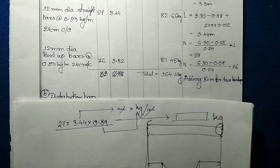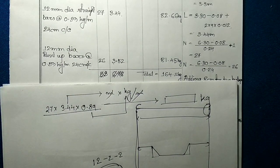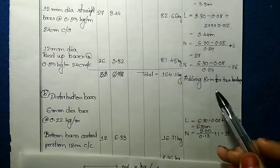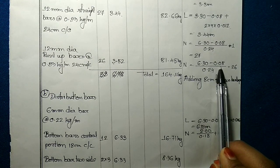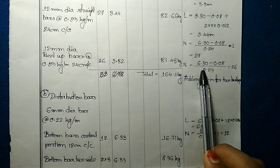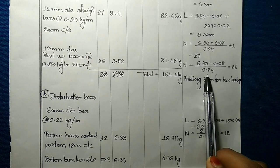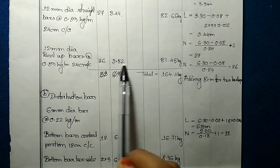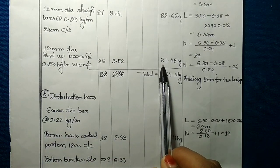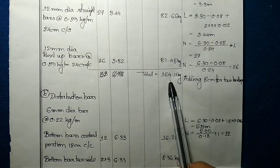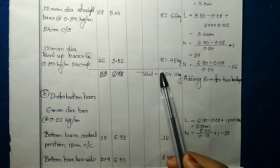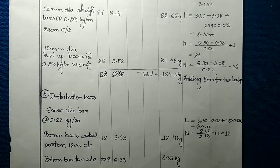For the bent up bars, the number is 26. Multiplying the number, length (3.52m), and weight per meter run together, we get the quantity as 81.45 kg. The total quantity of main bar is 82.66 + 81.45 = 164.11 kg.